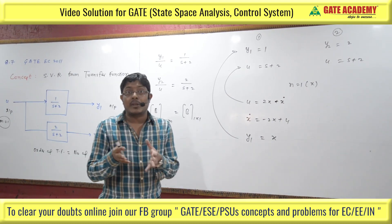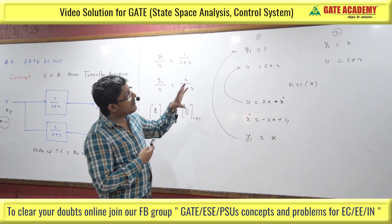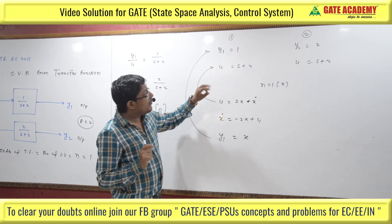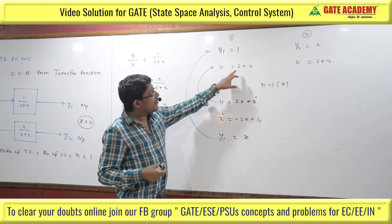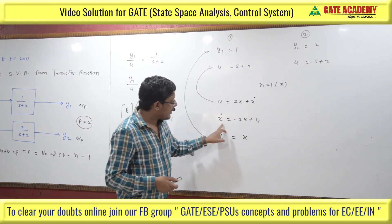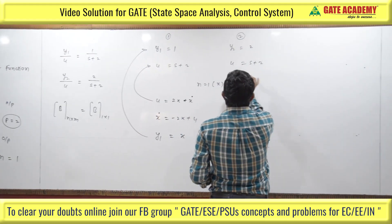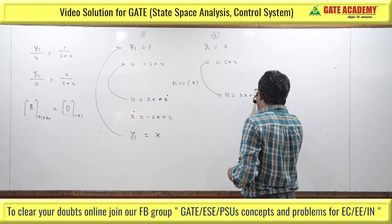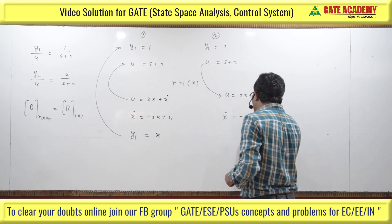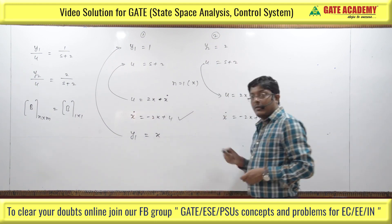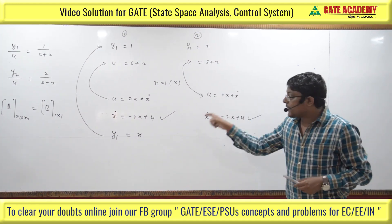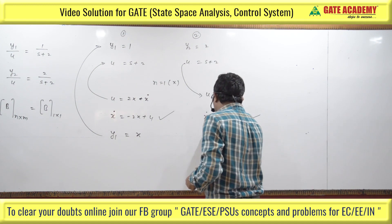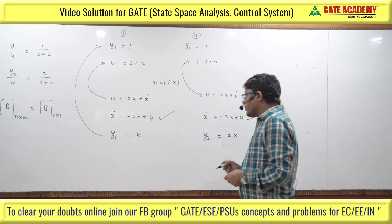From the second transfer function Y2/U = 2/(s+2), the output y2 = 2x. The state variable equation and output equations are now established. This is different from a single output — here we have multiple outputs, so y2 equals 2x.